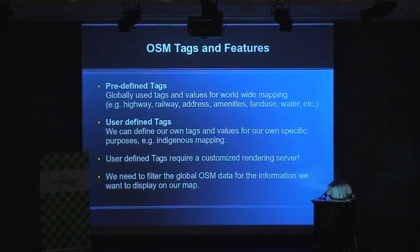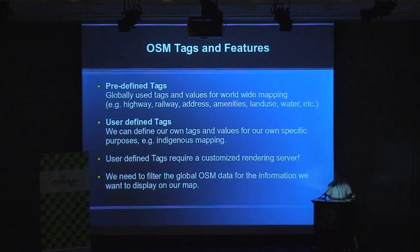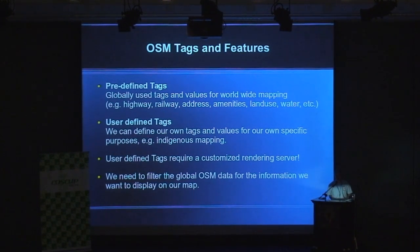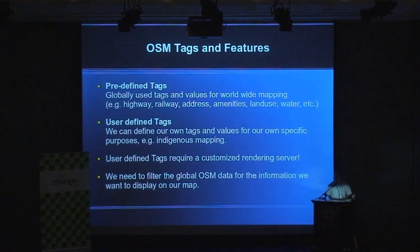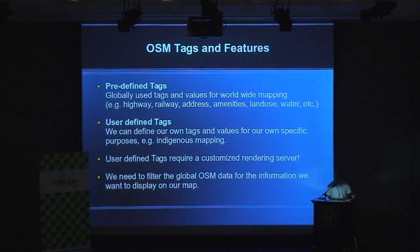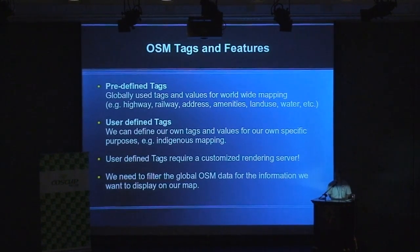In OpenStreetMap, we have predefined tags which are globally used worldwide — general tags like highway tags, railway addresses, and so on. We can also define our own tags which we need for a specific mapping purpose. For example, I have a project for indigenous mapping, helping indigenous tribes in Taiwan create custom maps based on their own data for their own needs. If you want to render user-defined tags, you need a customized rendering server, because the main OSM rendering server does not know about these tags and will not display them.